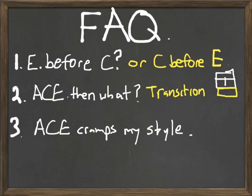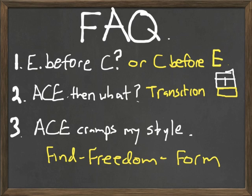Some seasoned writers say the ACE model cramps their style and that no one really writes this way. To them I say: find freedom in the form and form in the freedom. The ACE model is not a method of writing so much as a tool for thinking about arguments. However a paragraph is written, it has a logic, and the ACE model can help you find that logic. Having taught it to writers of various levels and disciplines, I'm constantly reminded that it provides a surprising amount of flexibility.